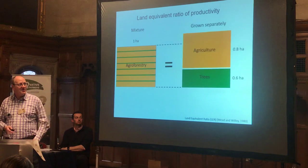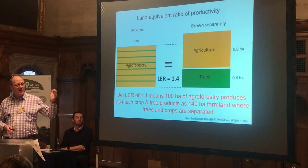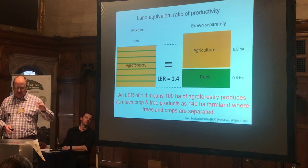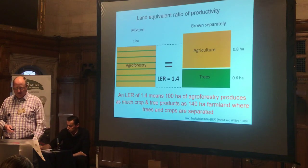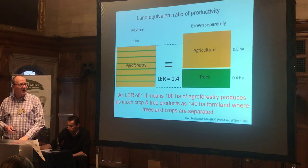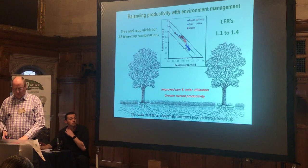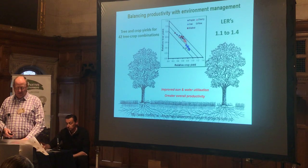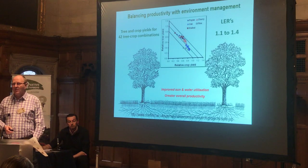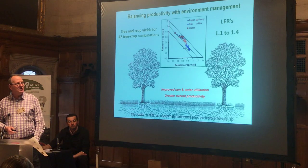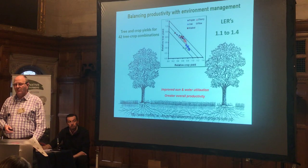Steve has already explained the concept of land equivalent ratios — growing agroforestry as a combination of trees and either pastoral or crops compared to growing them separately. Land equivalent ratios reported up to 1.4, and a big piece of work headed up by Cranfield University reported productivity increases of anywhere between 1 at worst to 1.4 at best, with the majority of those 42 tree-crop combinations around 1.2 or 1.3 — that's 20 to 30% more productive.